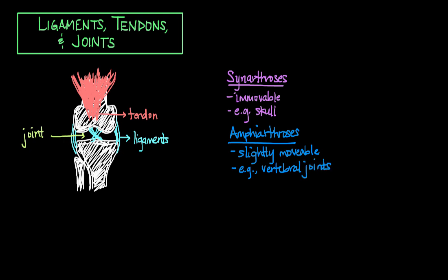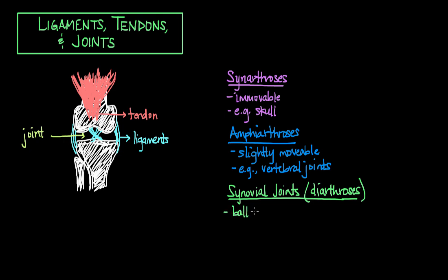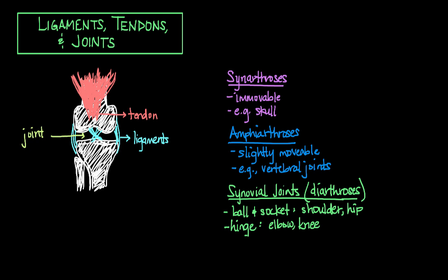Finally, we have synovial joints, which are also known as diarthroses, of which there are a couple different types. One type is the ball and socket synovial joint. You'll find examples of ball and socket joints in your shoulders or in your hips — these are joints that have many degrees of motion. Another type of synovial joint is the hinge joint. An example of a hinge joint would be your elbow or your knee, where that joint pretty much moves in just one plane, like the hinge of a door.